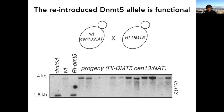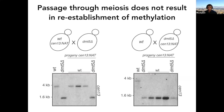In many systems, de novo methylation is developmentally regulated, so we asked whether during meiosis methylation might be established. We crossed a wild-type strain to a DNMT5 knockout strain (with an unmarked, unmethylated centromere) and asked what happens when that unmethylated centromere is brought together with wild-type DNMT5 through a sexual cross. The unmethylated centromere stays unmethylated — passage through meiosis is not sufficient to efficiently restore methylation.